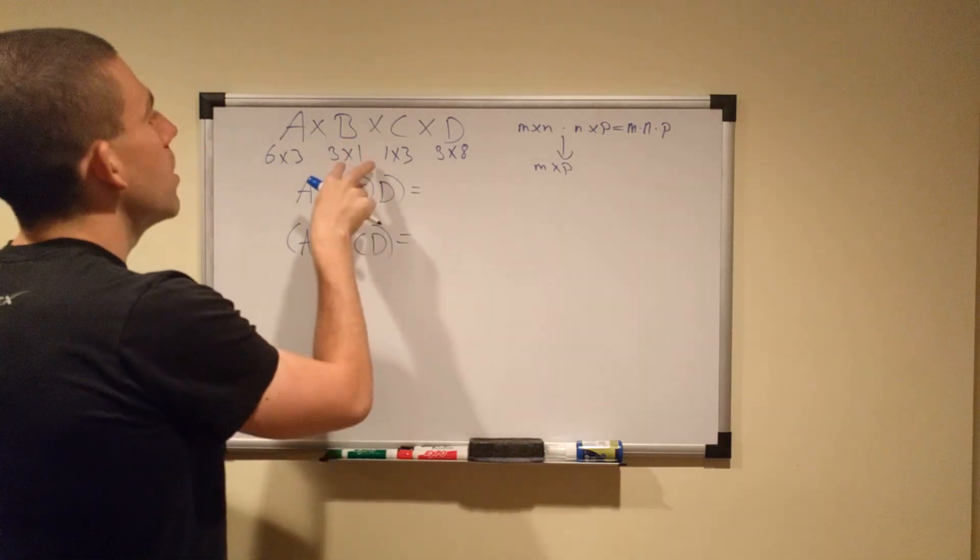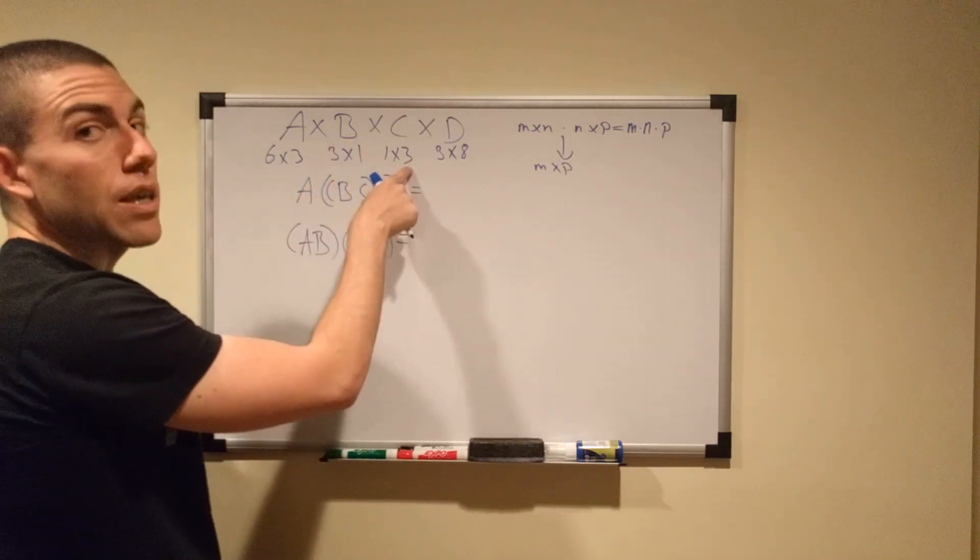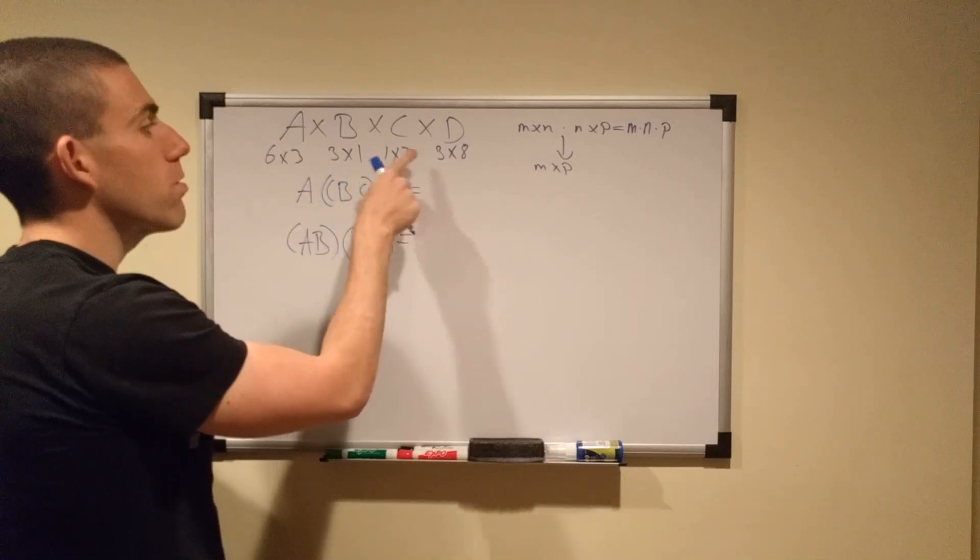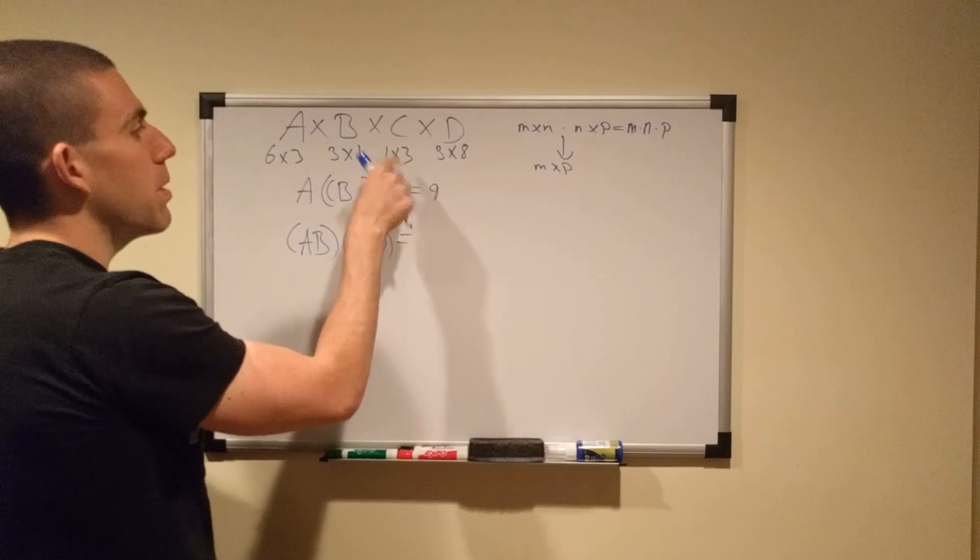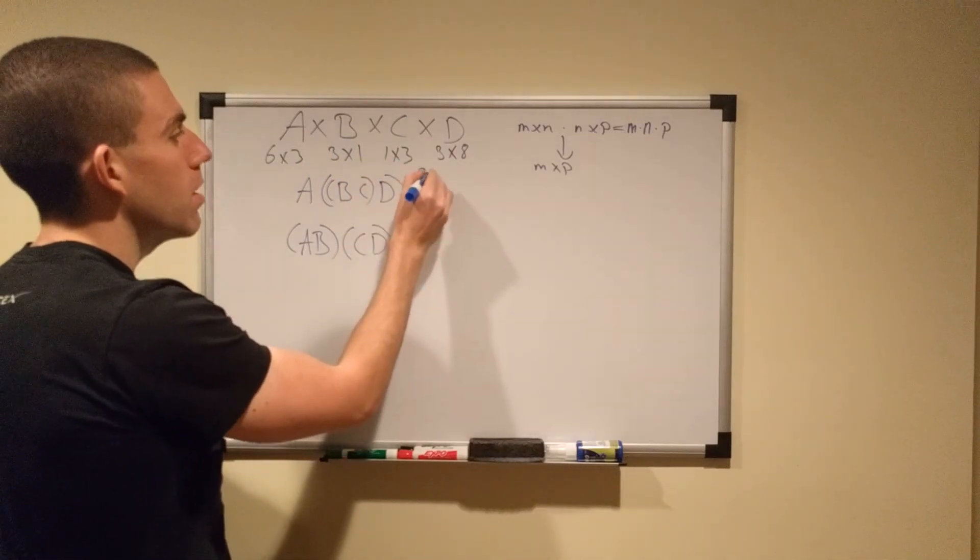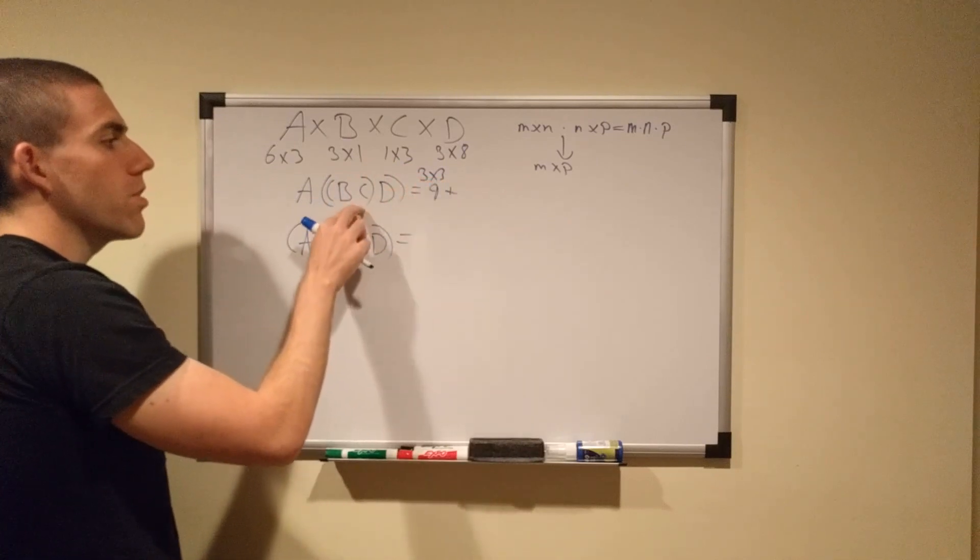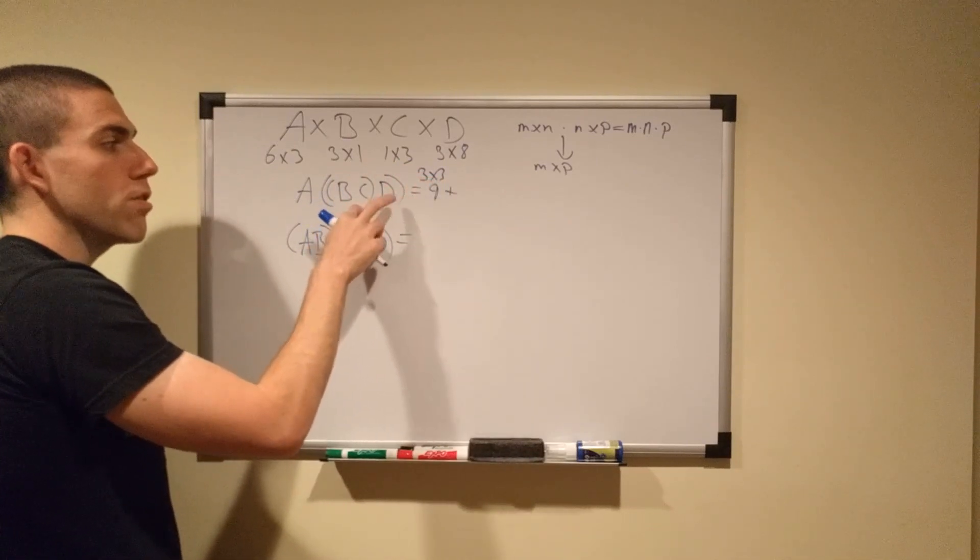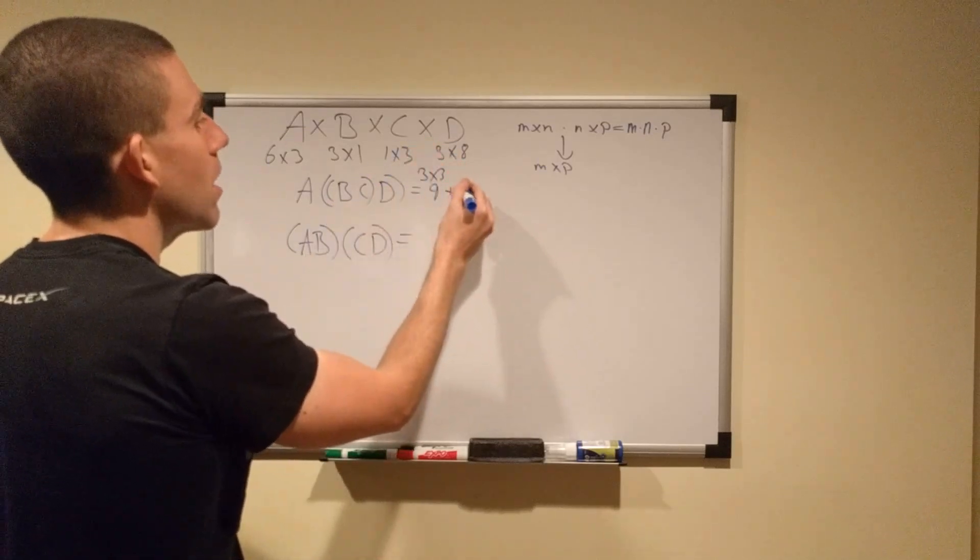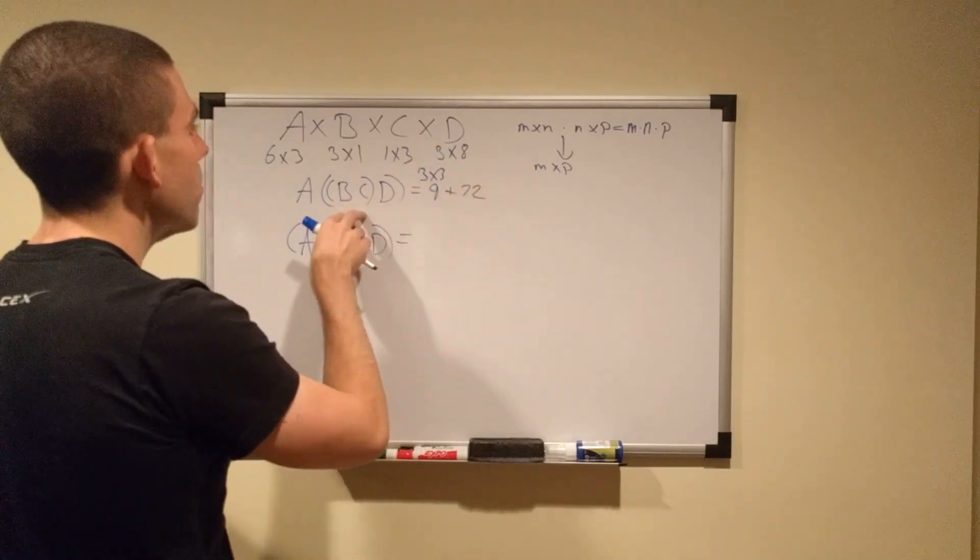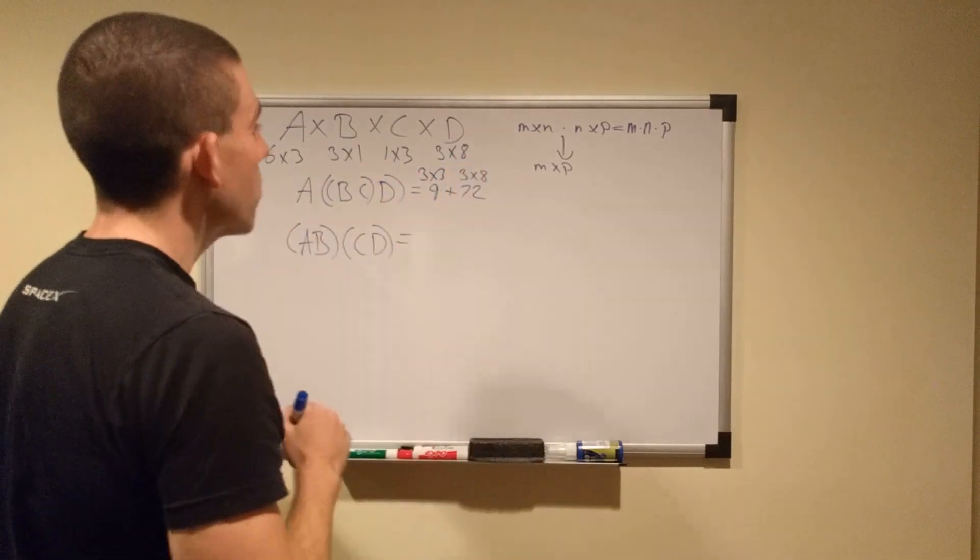So we start with B times C. We have M by N by P multiplications. 3 by 1 is 3 times 3 is 9 multiplications. And it yields an M by P product matrix, 3 by 3. Now we have the cost of multiplying the product matrix by D. So we have 3 by 3 is 9 times 8 is 72. And that yields a 3 by 8 product matrix.